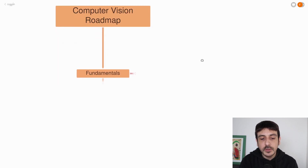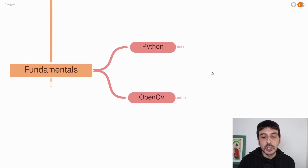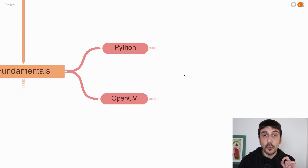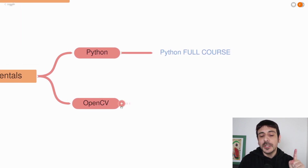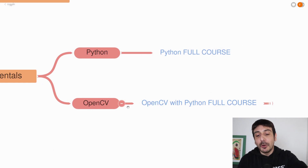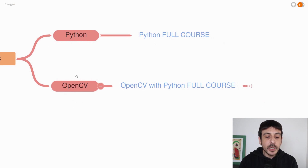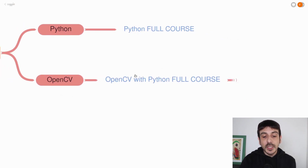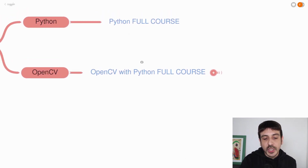The first step you should follow in this roadmap is covering the fundamentals. When I say fundamentals, I mean Python and OpenCV. These two skills are definitely the most important skills you should start with in order to become a computer vision engineer. This computer vision roadmap is an updated version of one of my previous videos, and in this version I have added some specific resources you can follow to learn all the different skills in this roadmap. You can take a look at these two resources I have added for Python and OpenCV. Regarding OpenCV, this is a three-hour fully comprehensive course of OpenCV with Python and I definitely recommend you to check out this course.